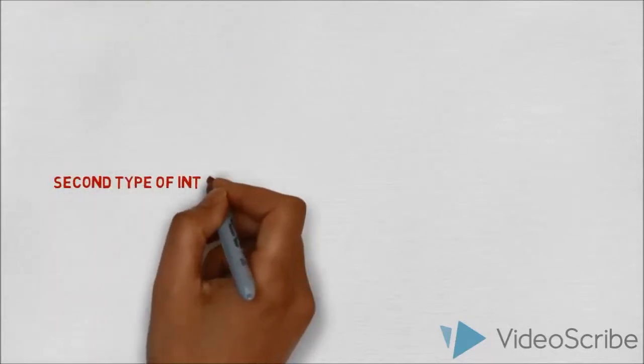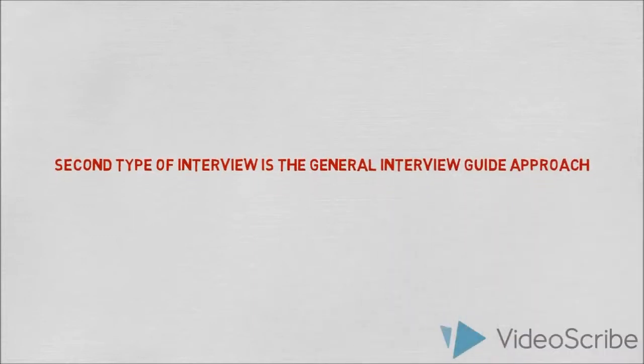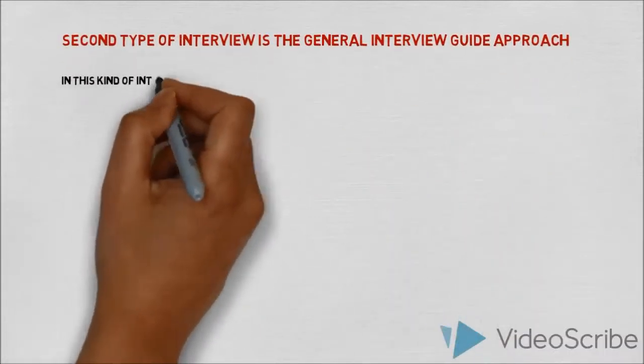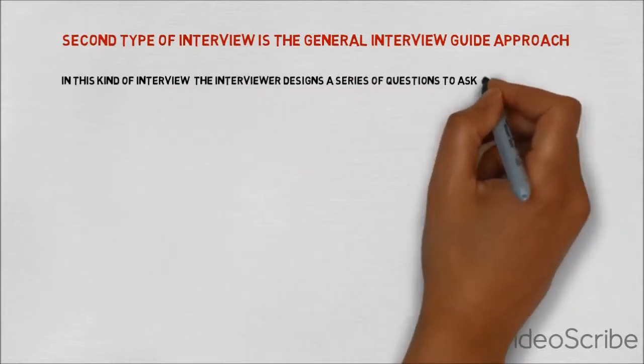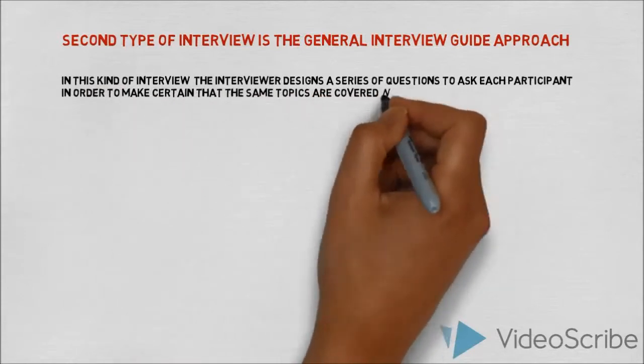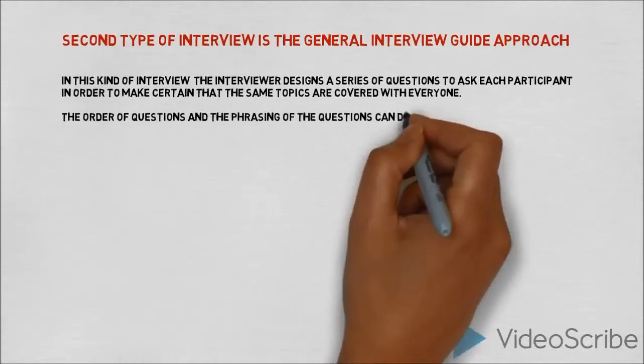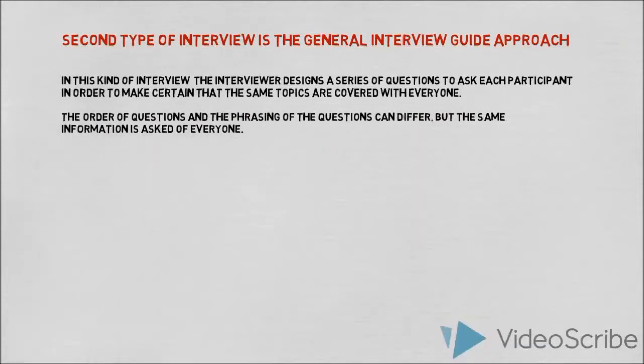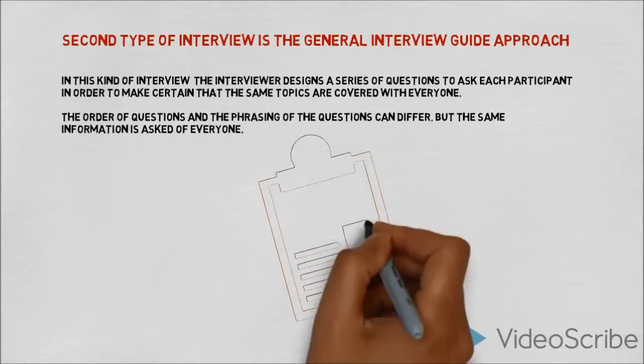The second type of interview is a general interview guide approach. In this kind of interview, the interviewer designs a series of questions to ask each participant in order to make certain that the same topics are covered with everyone. The order of the questions and the phrasing of the questions can differ, but the same information is sought from everyone.